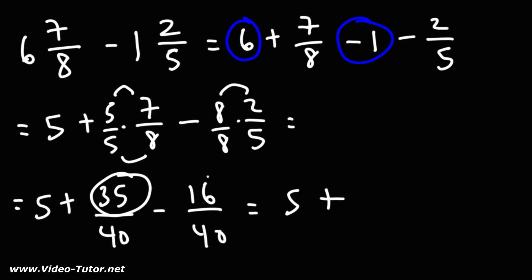Now, 35 minus 16. 35 minus 16 is 19. Once you get to this point, when you have a whole number plus a fraction, you can write that as a mixed number. 5 plus 19 over 40 is 5 and 19 over 40. So this is the answer.